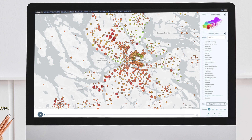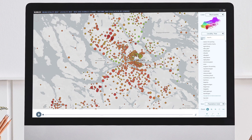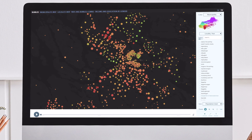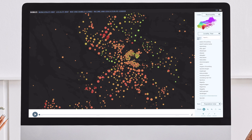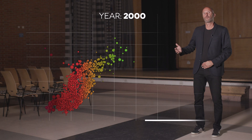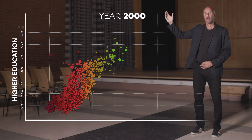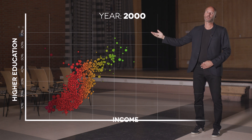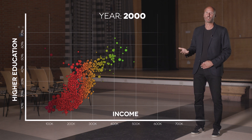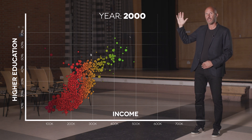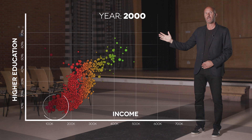In the tool you can now see the Stockholm region broken down into around 1,300 different neighborhoods, each one represented by a bubble. On the vertical axis you see the proportion of higher education and on the horizontal axis you see the average income. In other words, neighborhoods in the top right are rich and educated, and the bottom left have lower education and income.